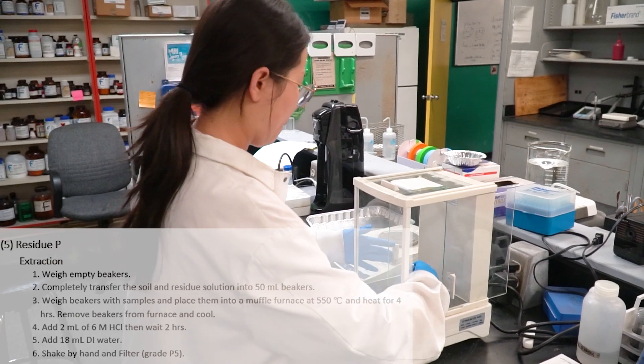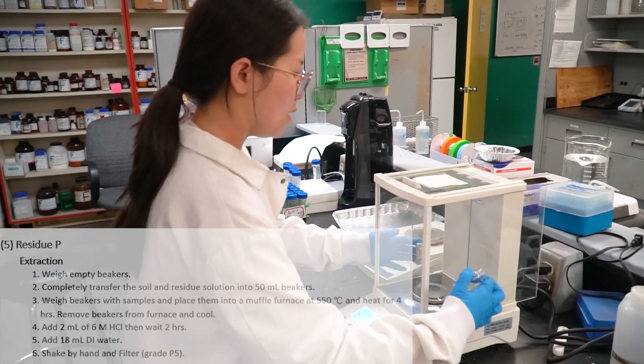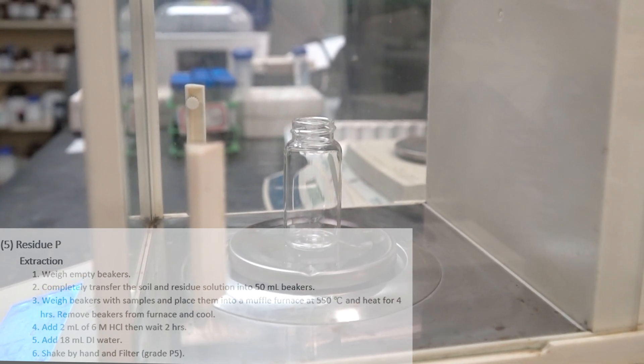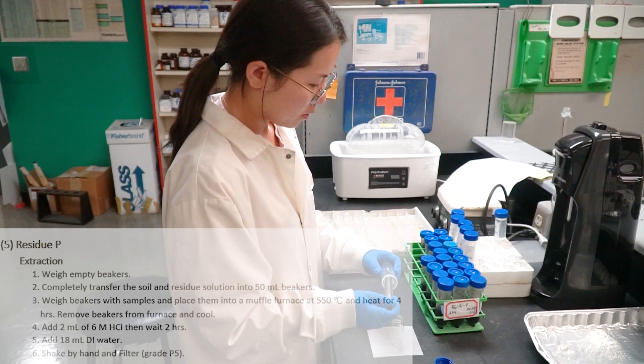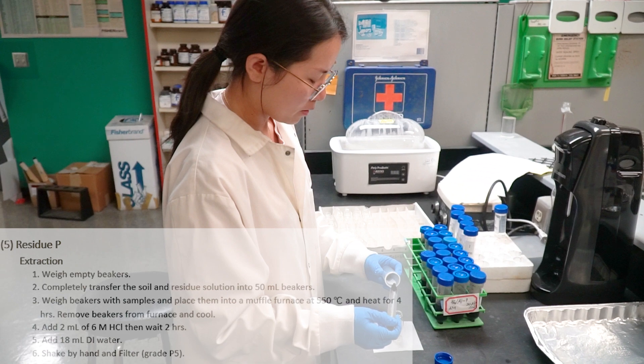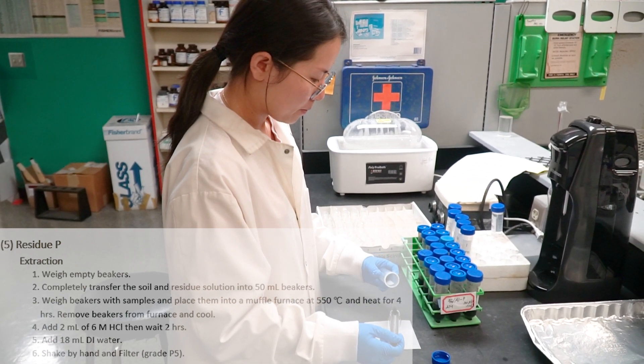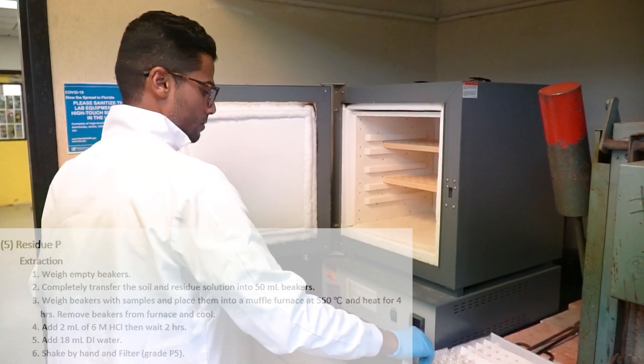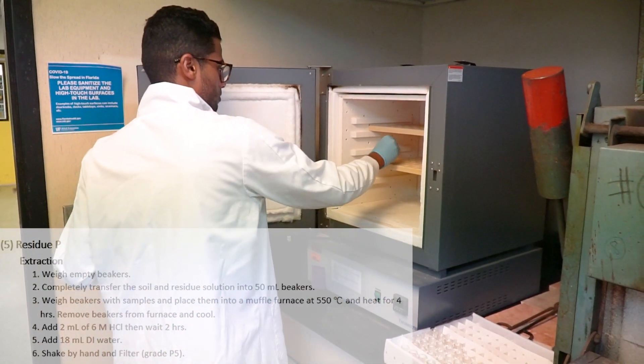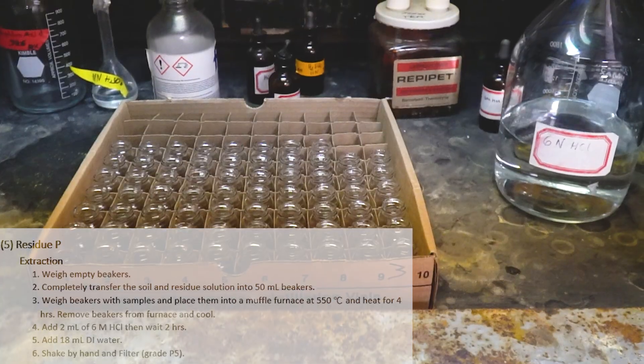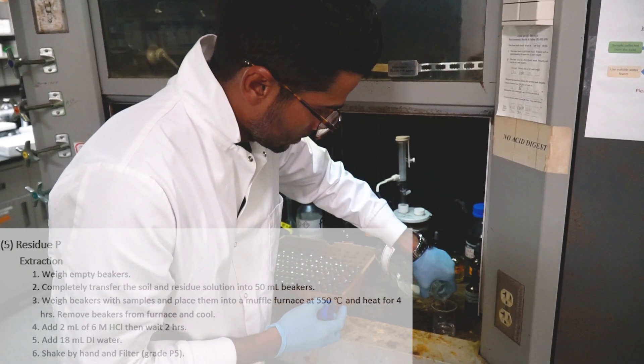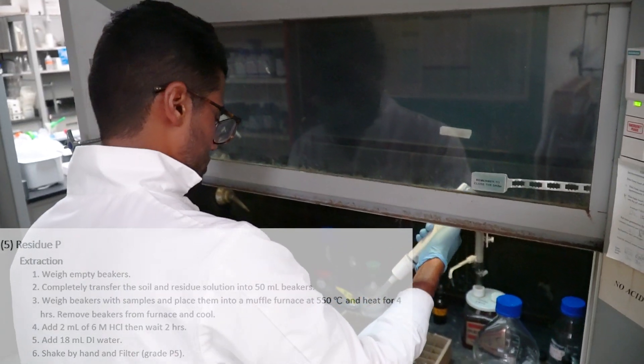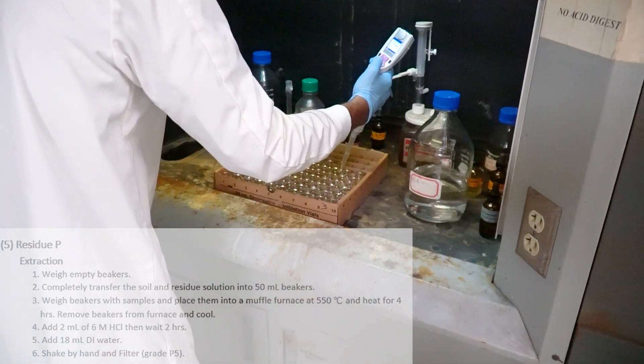For residue P, first we have to weigh the empty beakers. Then we have to completely transfer the dry residue soil into the beakers then weigh them again. Then we have to put these beakers into the muffle furnace at 550 degrees Celsius for four hours. When the beakers are cooled down we have to add 6 molar HCl and the amount is 2 milliliter for two hours. After that we have to add 18 milliliter of DI water.